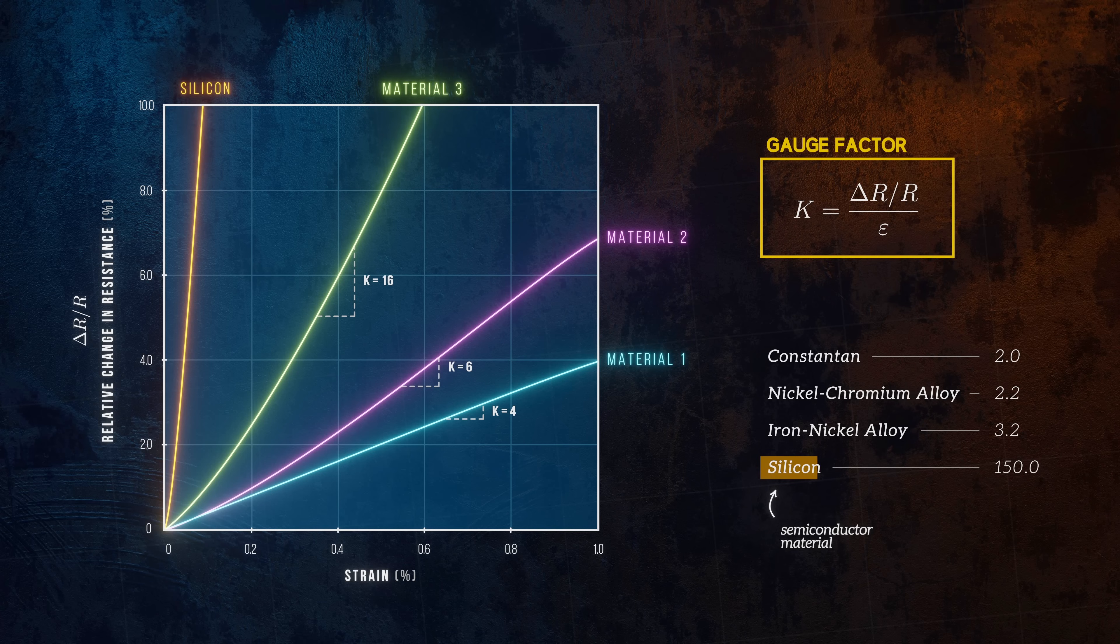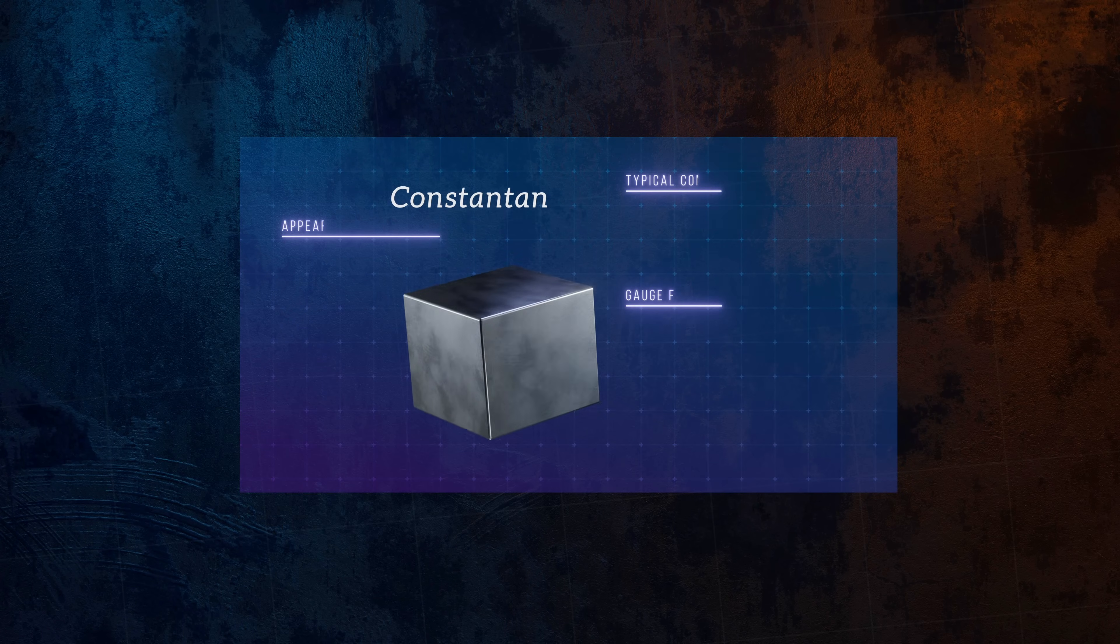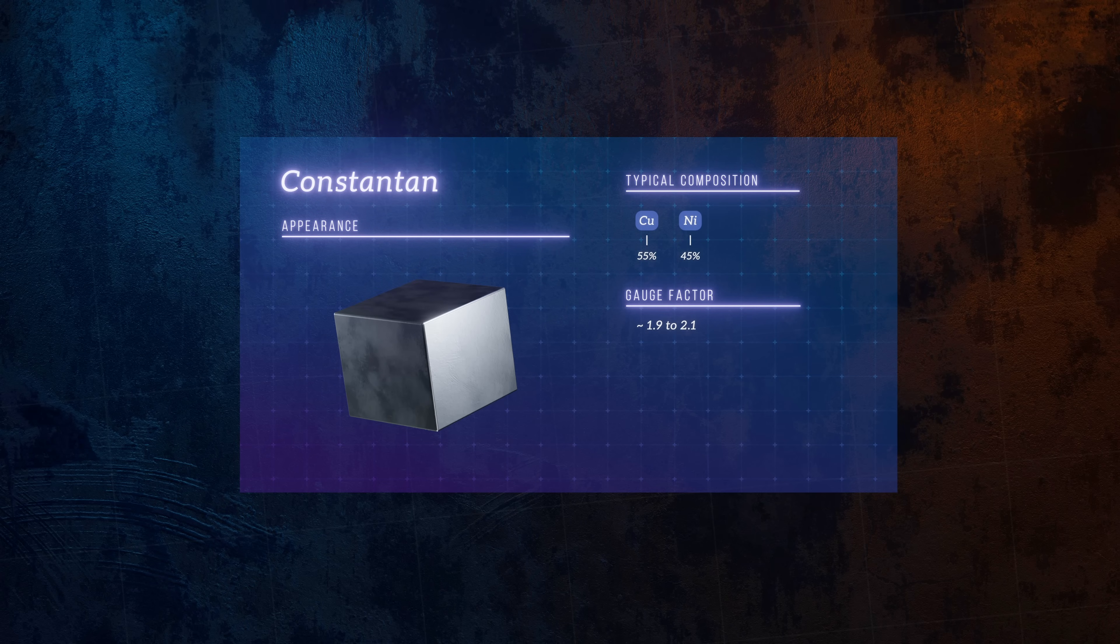Most general purpose strain gauges are made out of constantin, an alloy of copper and nickel. It has a moderate gauge factor of around 2, but has other properties that make it a really good choice for use in strain gauges. It has good resistance to corrosion, and good fatigue properties for example.